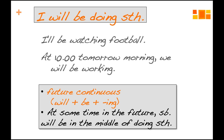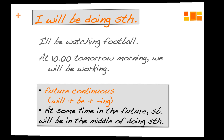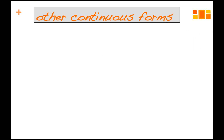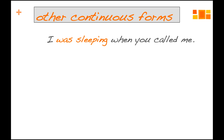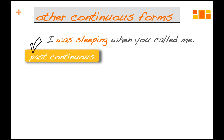The continuous is, of course, a progressive — it means the ing-form. Let's look at some other continuous forms and we'll find out that the meaning is basically the same. 'I was sleeping when you called me' — this is the past continuous, the past progressive. We want to express that yesterday when you called me, I was in the middle of sleeping. So the past continuous is like the future continuous: we're in the middle of doing something — just the tense is different.